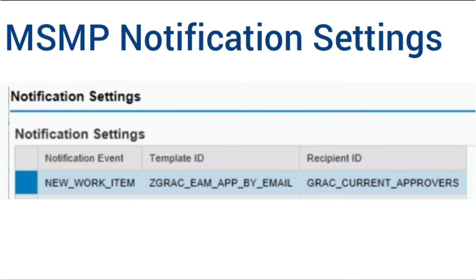Will the delegated approver receive email notifications? Yes. If we have set up the notification settings in Step 5 of the MSMP workflow for the particular stage of approval with the recipient ID as current approvers, then once we delegate the access request, the same notification template is triggered as an email even for the delegated approver, informing them that access requests are pending in their inbox for approval.